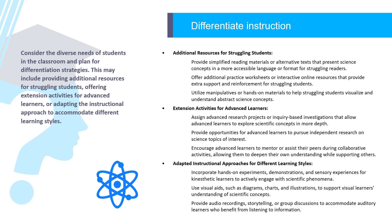Step 7: Differentiate instruction. Consider the diverse needs of students in the classroom and plan for differentiation strategies. This may include providing additional resources for struggling students, offering extension activities for advanced learners, or adapting the instructional approach to accommodate different learning styles. For struggling students, provide simplified reading materials or alternative texts, additional practice worksheets or interactive online resources, and manipulatives or hands-on materials to help them visualize and understand abstract science concepts.